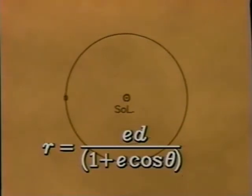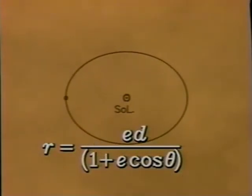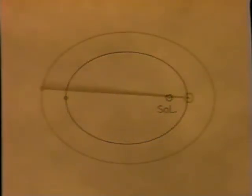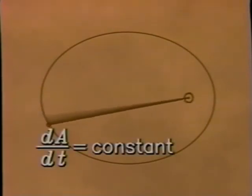Kepler's first law states that each planet moves in an ellipse with the Sun at one focus. While waging war on Mars,